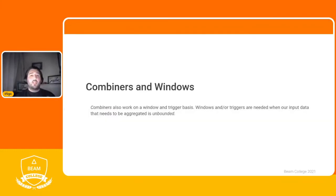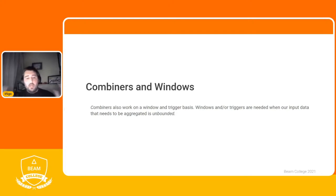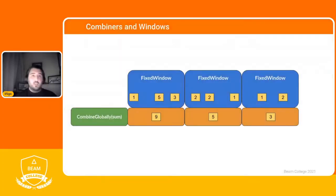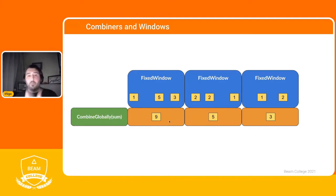Combiners also work on a window and trigger basis, giving one output per window depending on the combiner type. Windows and triggers are needed for unbounded data because Apache Beam needs to know when to finish the aggregation — the idea is to split data into chunks of bounded data using triggers or windows. With fixed windows and CombineGlobally, all elements within the same window are summed: we get nine, five, and three — one output per window.